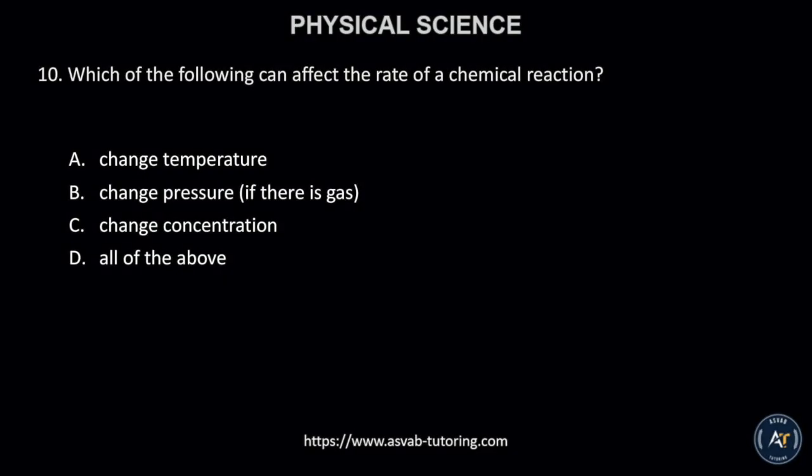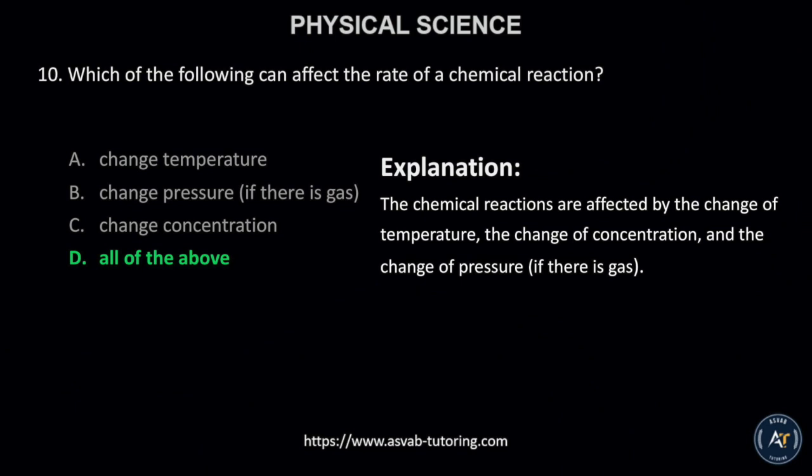Number 10. Which of the following can affect the rate of a chemical reaction? A. Change temperature, B. Change pressure if there is gas, C. Change concentration, or D. All of the above. The correct answer is D. All of the above.